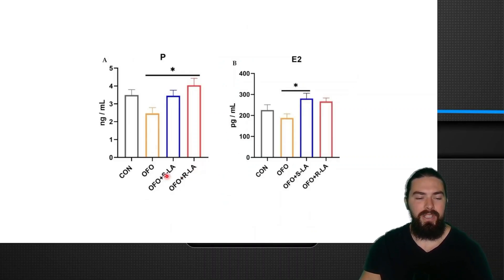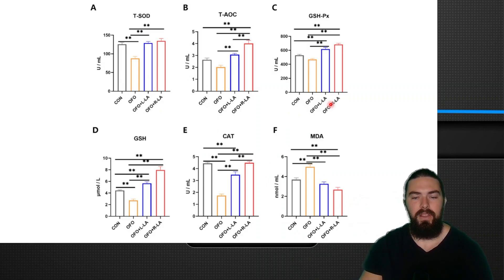Here you can see progesterone—oxidized fish oil reduced steroidogenesis, progesterone, and estradiol, but this was female animals and they need the estrogen. The R-lipoic acid was the best at increasing progesterone but not that good at increasing estrogen, which is good because you want to be more in a progesterone-dominant state. You don't want to be in an estrogen-dominant state.